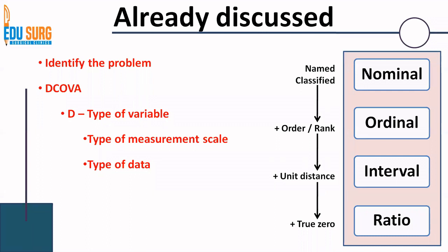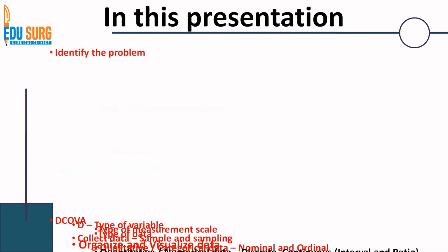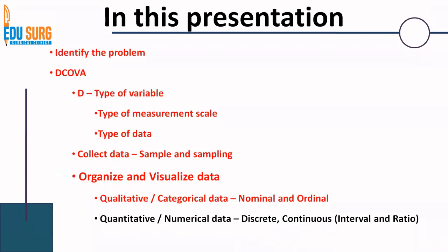Just a quick recap, we have seen the DCOVA framework and we are on organization and visualization of data. We have already seen the types of variables, the measurement scales, the nominal, ordinal, interval and ratio scales, sample and sampling, and we have also seen the qualitative data organization and visualization.